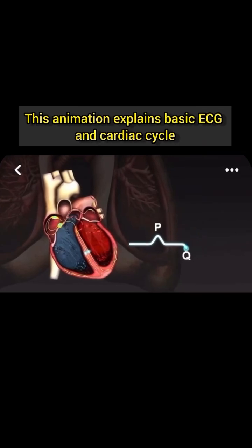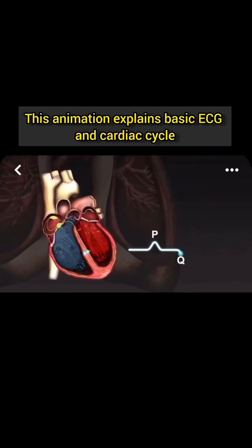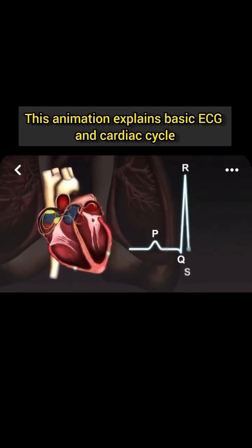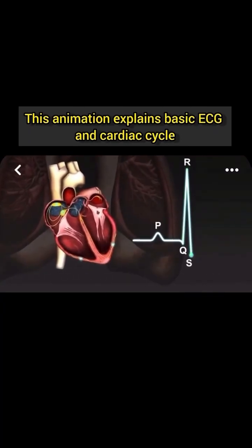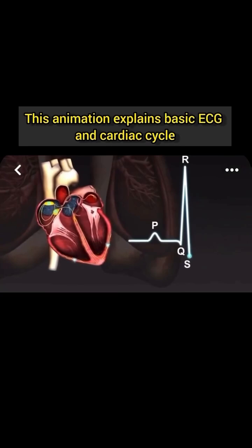The passage of the electrical signal through the ventricles produces a large spike called the QRS complex. The QRS complex is much larger than the P wave, because the ventricles are much larger than the atria, and so produce more electrical activity. Most of the QRS complex represents depolarization of the left ventricle, which has much greater mass than the right.